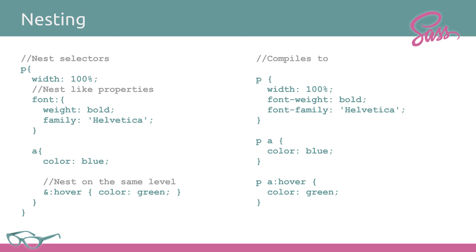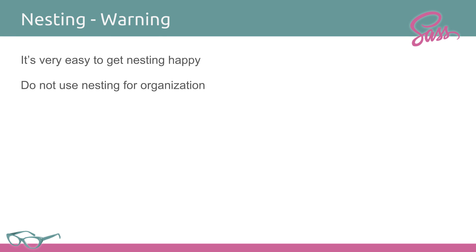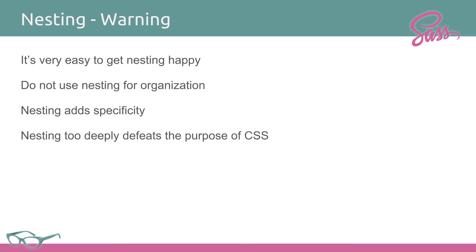When it gets to the anchor tag, it gives you 'paragraph anchor' because anchor is underneath paragraph. To nest on the same level, you use the ampersand — so 'paragraph anchor:hover' gets the green color. As I said, it is really easy to go nesting-happy, and it's the first thing everybody who uses SASS does. Do not use nesting for organization — that's not what nesting is for. Nesting is for creating things that are dependent on a parent. Every time you nest a level, you're adding specificity, and the more deeply you nest, you defeat the whole purpose of CSS. The purpose of CSS is to create a small number of simple rules that produce a complex and robust output. The more specific you become, the more you are hard-coding little bits and pieces rather than relying on general rules, and it starts causing weird problems and conflicts.